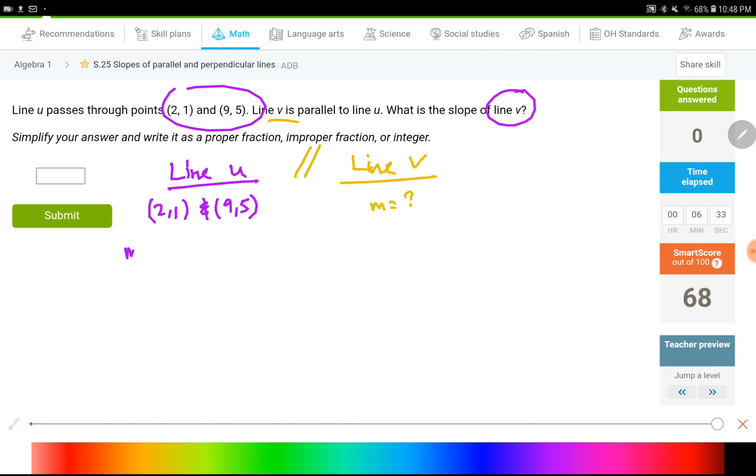This can be done. We went through this two weeks ago. It was Y2 minus Y1, that represents the rise, over X2 minus X1, that represents the run. So subtract the Y values: 5 minus 1, divided by 9 minus 2. Numerator is 4, denominator is 7.